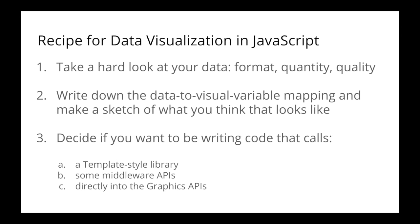Then you come to the big technical decision: what kind of code do you want to be writing? Do you want to write JavaScript code that makes calls to a template-style library? Do you want to be writing code that makes calls into a middleware API where you're mapping axes and transforming vote counts into coordinates in a triangle? Or do you want to be writing WebGL shader code that tells the GPU how to render points on the screen? That's basically the big technical decision you need to make.